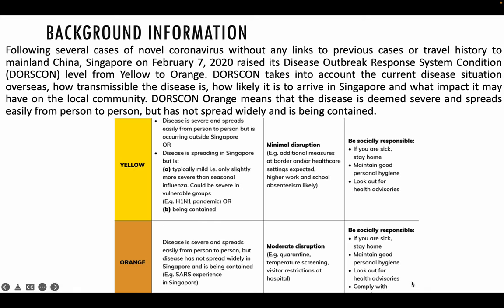Remember — before you answer your surprise question, before you start analysing, always read the background information. Pause the video and read through the background information. You will realise that this background information talks about Dorscon and how Singapore actually raised the Dorscon from yellow to orange, and what Dorscon orange essentially means — it means that the disease is severe, it spreads easily from person to person. There's a form of moderate disruption to daily life and a need to be socially responsible. By reading the background information, you can already get a sense that for this set of sources, we are looking at COVID and Dorscon — the whole Dorscon yellow to orange situation.